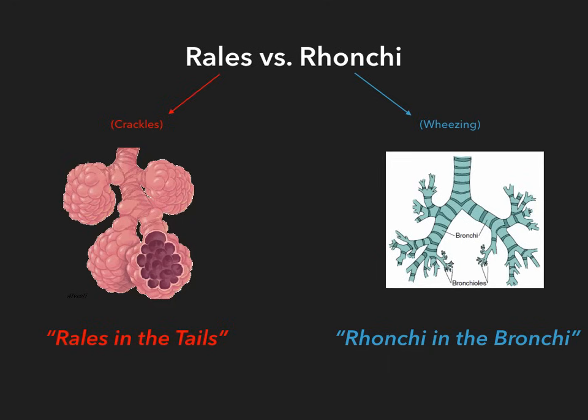Rails in the tails — tails refer to the end, the tail, of the respiratory system. Alveoli are literally the last thing involved in the respiratory tree. So, Rails in the tails. Ronchi in the bronchi is just beautiful — it tells you exactly where they are, and it's easy to remember.